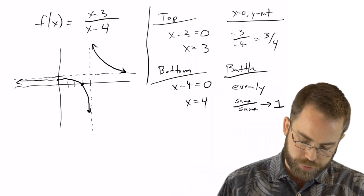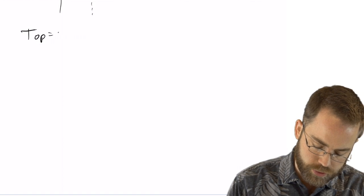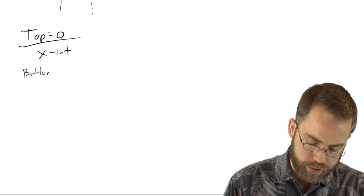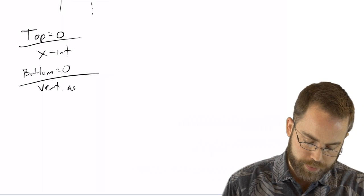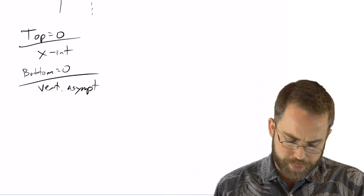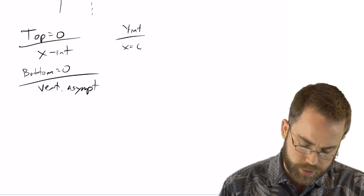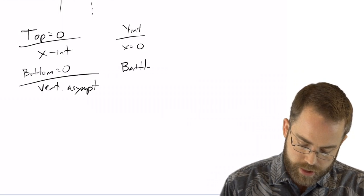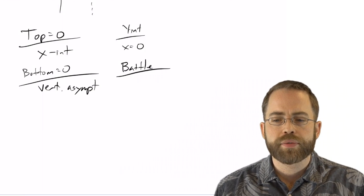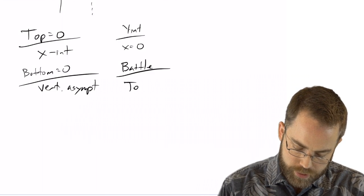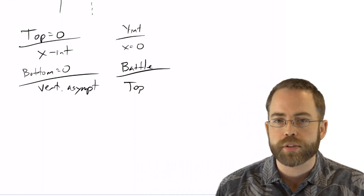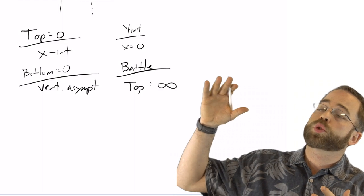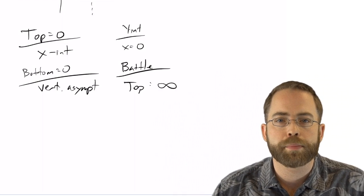Let's summarize the rules we just used. When the top equals zero, that is going to be an x-intercept. When the bottom equals zero, that's going to be a vertical asymptote. It's also helpful to find the y-intercept — what happens when x equals zero. And here's the complicated part: in the battle of the exponents, who wins? If the top has a higher-degree polynomial, then in the long run it will tend off towards infinity — the numerator is growing faster than the denominator.